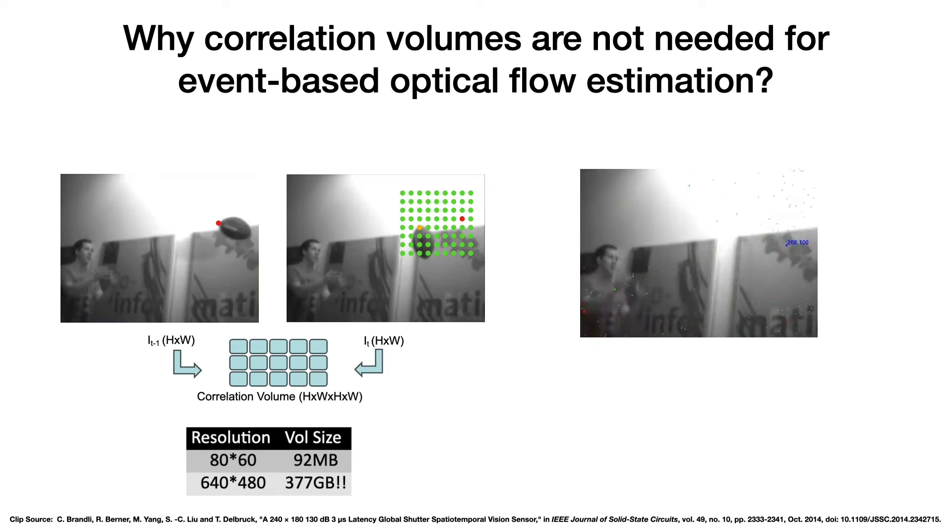In the literature, state-of-the-art optical flow methods optimize for maximum pixel correlations. For instance, to find a pixel matching the red dot in the second image, these methods compute and compare the correlation of the red dot with all other pixels, selecting the one with the highest correlation. However, computing and storing these correlations is resource-intensive due to poor scaling with increased resolution.